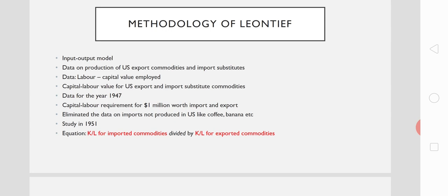Leontief devised a new econometric model called input-output analysis to find out the capital and labor requirements of export commodities and import commodities of the United States. He collected data for the period of 1947 — the study was conducted in 1953 but based on 1947 trade data. He collected the capital-labor requirements for the production of export commodities of the United States in 1947.